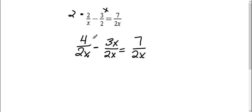On this side now, I'm going to combine it to make one fraction. So I'm going to get 4 minus 3x all over 2x equals 7 over 2x.